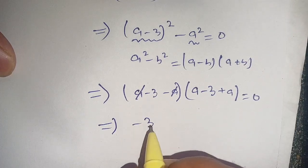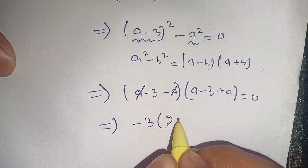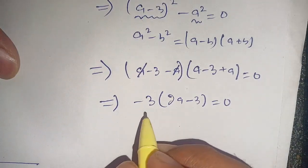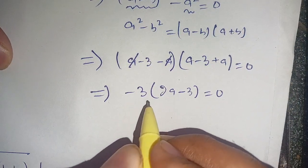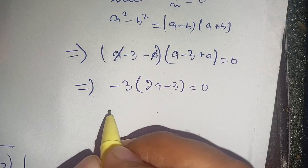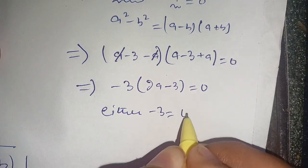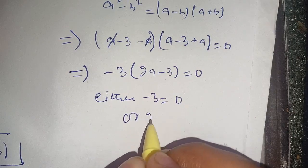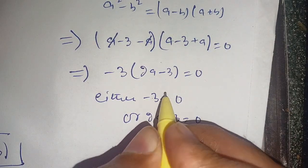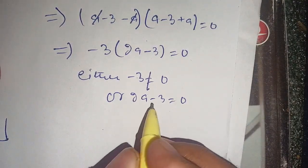We get minus 3 times (a plus a), which becomes minus 3 times 2a, giving us (minus 3)(2a minus 3) is equal to 0. Here there are two terms: one is minus 3 and the second is (2a minus 3). Either minus 3 is equal to 0 or (2a minus 3) is equal to 0. But minus 3 cannot equal 0.